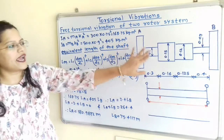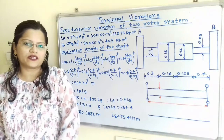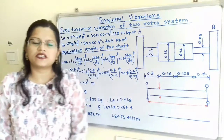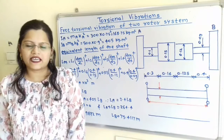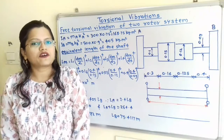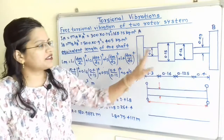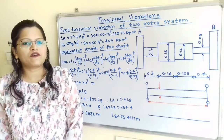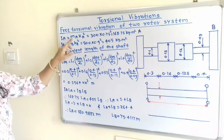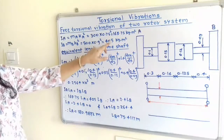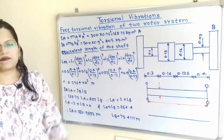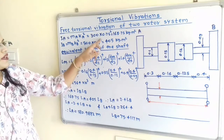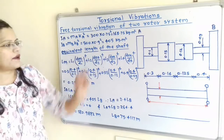These two rotors A and B have some mass moment of inertia. How to calculate this mass moment of inertia? The masses for A and B are mentioned in the question, and the radius of gyration Ka and Kb are also mentioned. Because these two rotors are not identical — mass is different and radius of gyration is also different — we have to calculate the mass moment of inertia separately. Ia = Ma × Ka² = 300 × 0.75² = 168.75 kg·m². And Ib = Mb × Kb² = 500 × 0.9² = 405 kg·m².